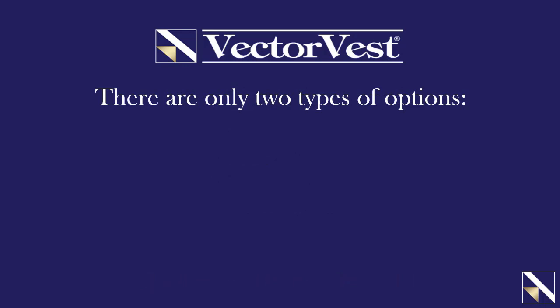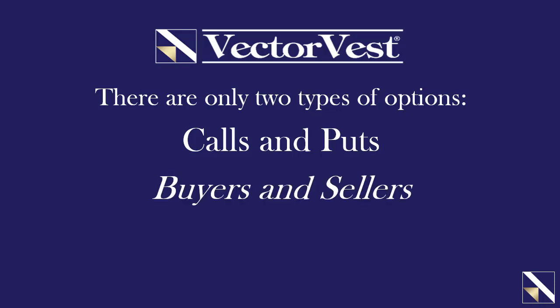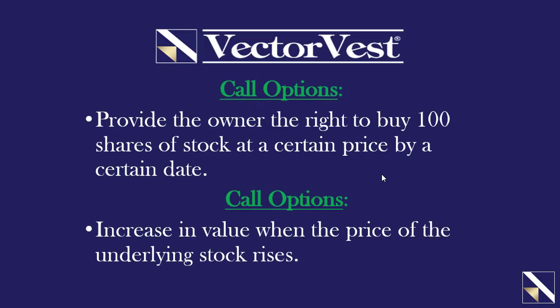To continue our introduction, there are only two types of options: calls and puts. And based on those two types of options, there are buyers and sellers. Once you understand the concept of what a call option is, what a put is, and that you can buy and sell them, the most advanced option strategies are built around this concept. A call option provides the owner the right to buy 100 shares of a stock at a certain price by a certain date — he's not obligated to buy it, it just gives them the right to do it.